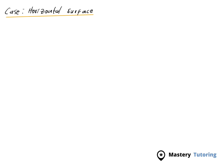Suppose we have an object — a box — on a horizontal surface. To calculate the normal force, we first draw the free body diagram using a dot to represent the object. There is the weight acting at 90 degrees to the surface, and the normal force also acts at 90 degrees to the surface. Remember, the normal force always acts at 90 degrees to the surface.